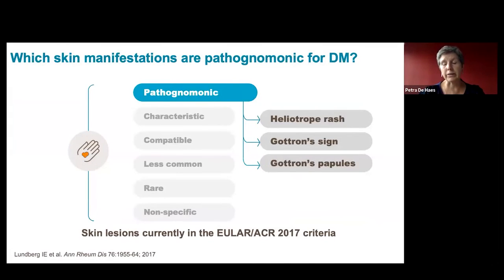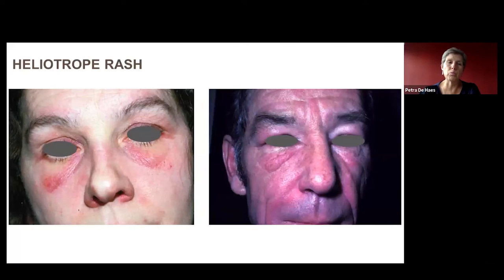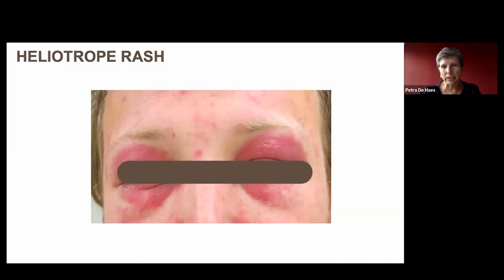The truly pathognomonic signs of dermatomyositis skin disease are three, and currently the only ones retained in the EULAR-ACR 2017 criteria. The first and most well-known is the heliotrope rash — periorbital erythema and edema. In some patients there is predominantly the erythema, while in others the edema predominates. Another example shows this periorbital, well-defined, circumscribed erythema and edema typical of dermatomyositis.